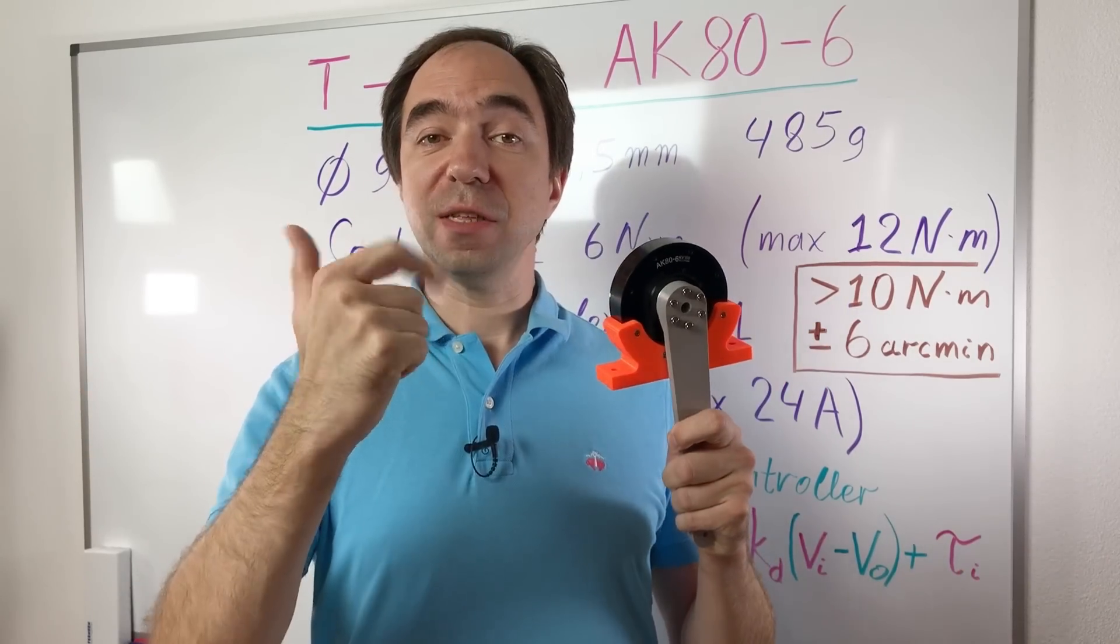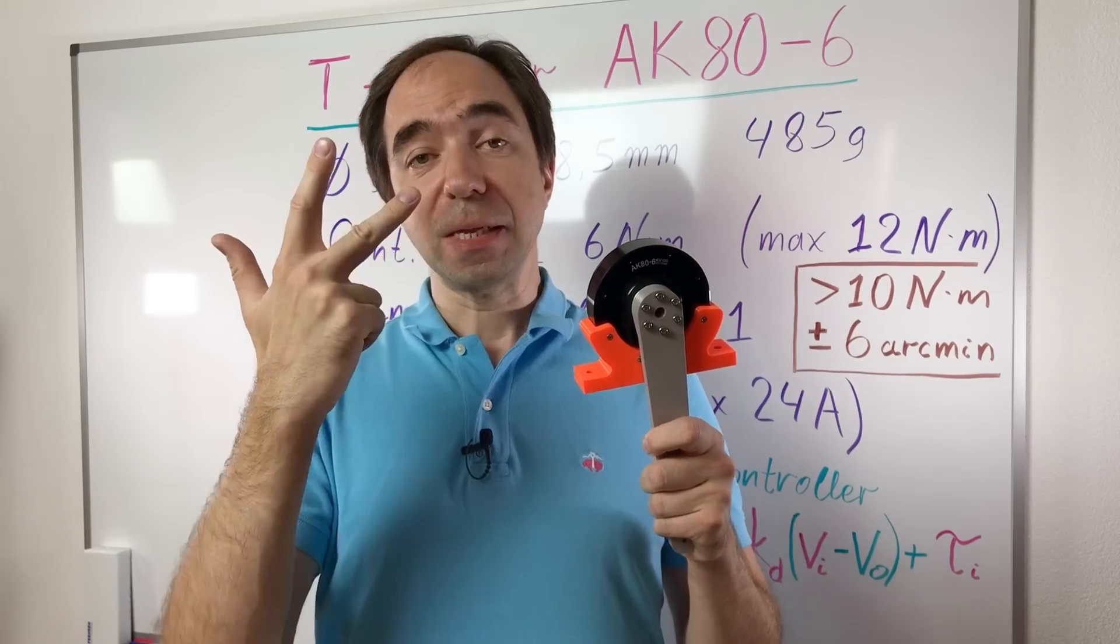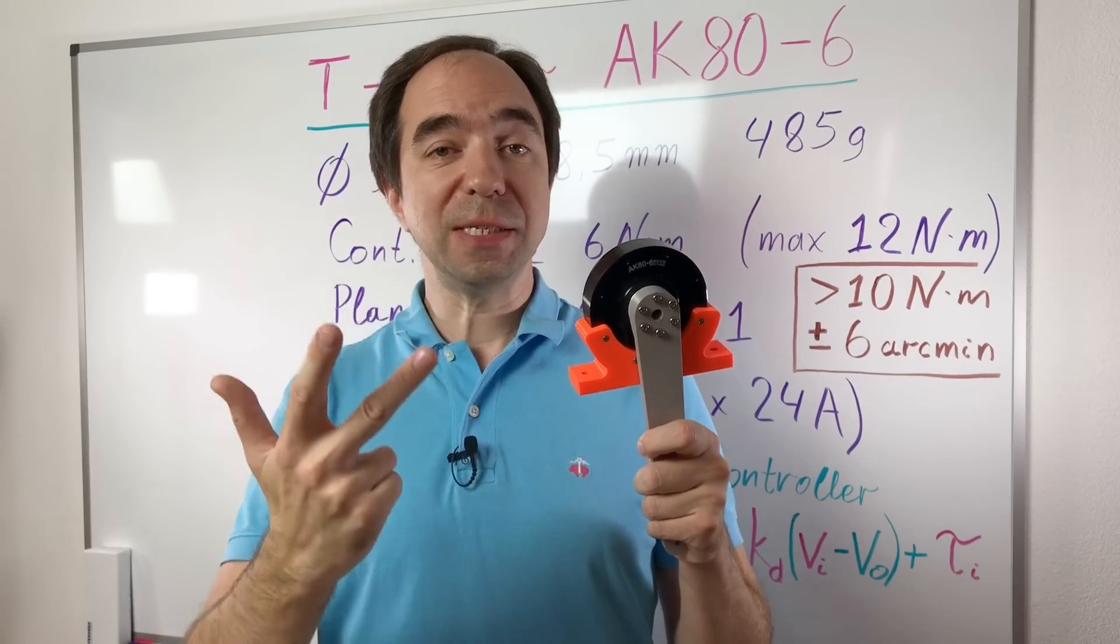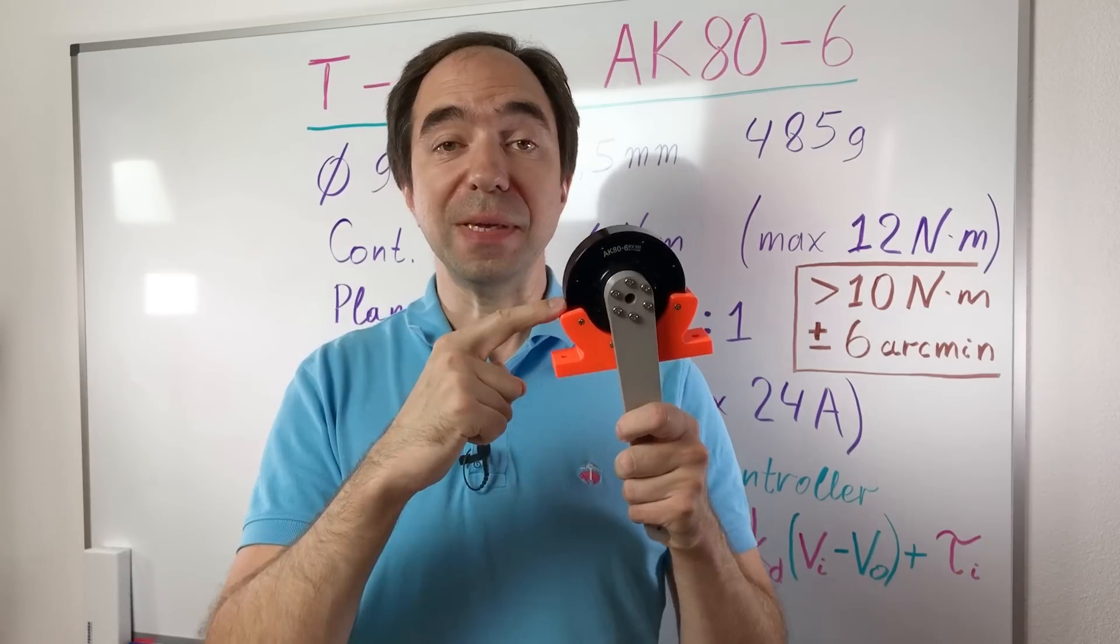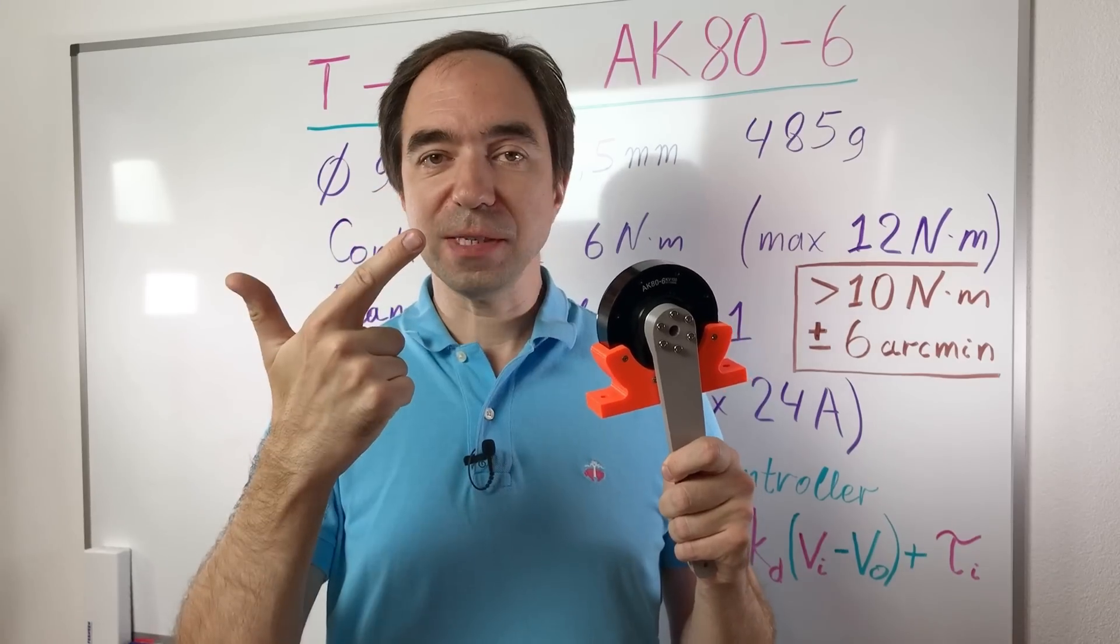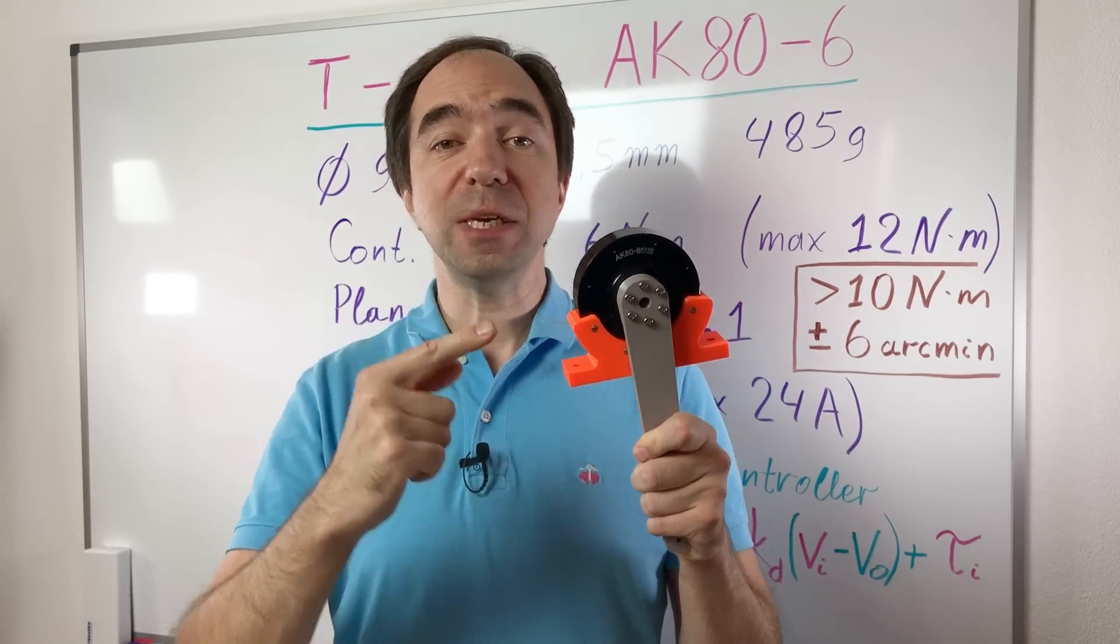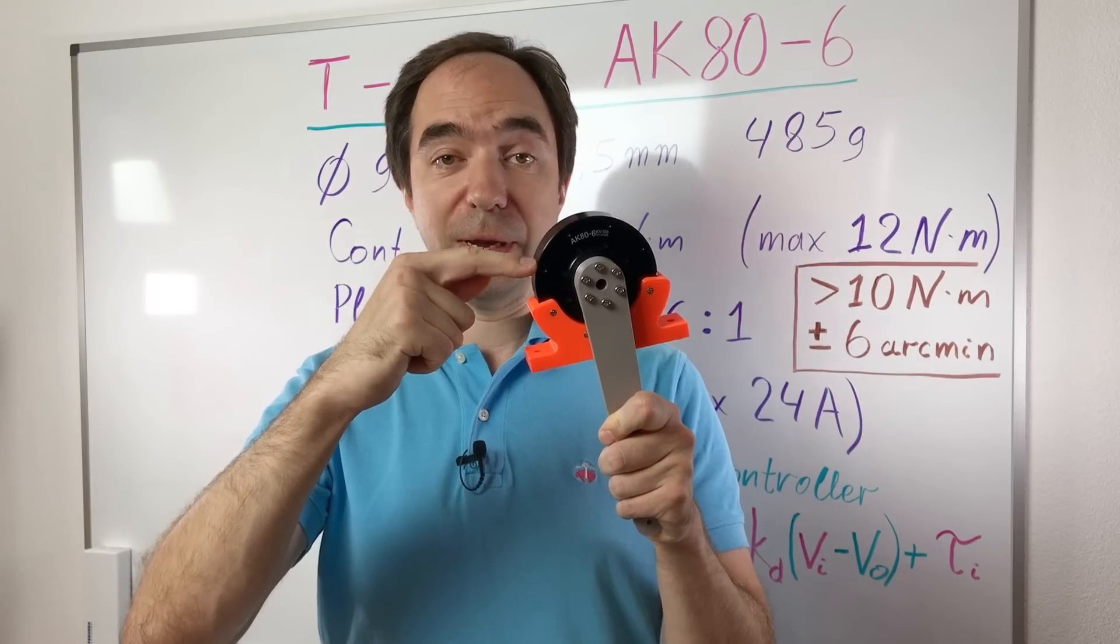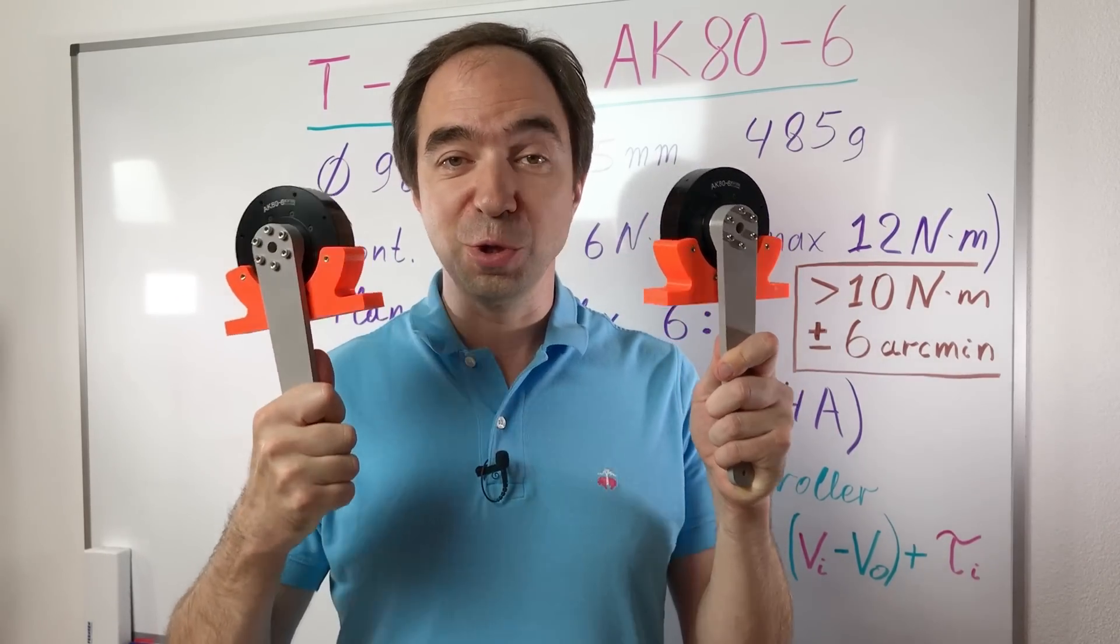For me, three main disadvantages of these actuators is price, backlash, and that there is no temperature measurements. The third one is normal because in MIT Mini-Cheetah controller there is no temperature measurements. Unfortunately. But the main three advantages is that it's lightweight, it's very fast and agile, and also on the website of the T-Motor company you can find a lot of information about the motor inside this actuator. Overall, I'm really happy with these actuators and I think I will find a good usage for them.